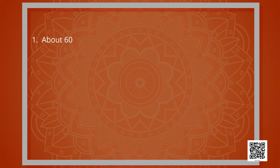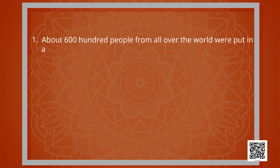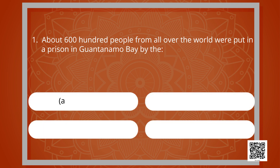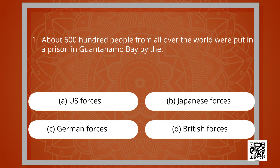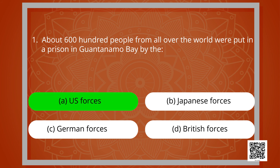Hope today's session was fruitful for you. Let's analyze what we have learnt. On your screens you have a question with four options. About 600 people from all over the world were put in a prison in Guantanamo Bay by which forces — US forces, Japanese forces, German forces, or British forces? The correct answer is US forces, and it was done because they were suspected of connection to 9-11.